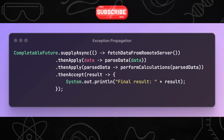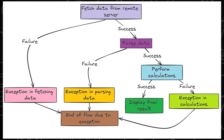Before we discuss those methods, let us just see how an exception propagates and how it affects the flow of program execution. Let us say this is our chain processing using CompletableFuture. First, it fetches the data from a remote server, then the data is parsed. After that, some calculations are performed on the parsed data and in the end, the final result is displayed. Now, suppose an exception is thrown in the first step of the remote server call itself. In that case, the flow will never invoke parsing data and performing calculation operations. Similarly, if an exception is raised in the parse data operation, then again the exception will end the flow there itself without calling the next step. The same is for the next chained operation as well. So it becomes very important to handle the exceptions properly to maintain a proper flow of the program.